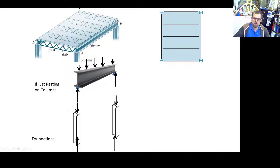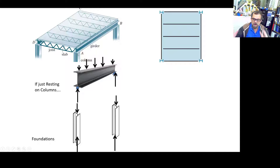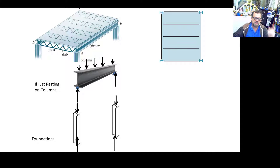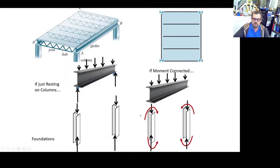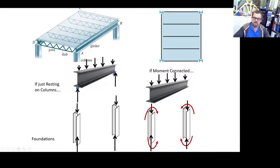You can design the foundations accordingly. If the girder is just resting on the column — not a moment-transfer connection — reactions go straight to the foundations, which distribute to the ground. But if it's bolted or welded as a moment-transfer connection, the deflecting beam produces moments in the columns. You must transmit that moment to the column and to the foundations, designing them for vertical load plus moment.